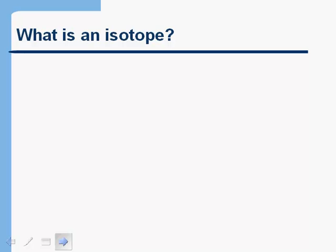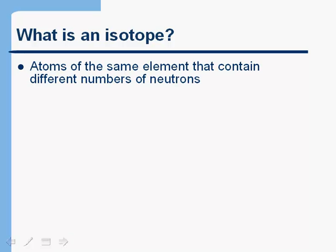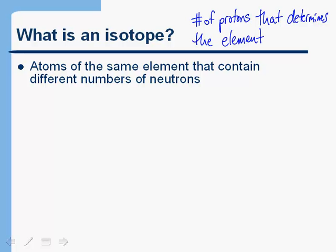You'll notice that on the last slide I was saying the most common form of carbon or the most common form of oxygen. And that's because atoms of the same element can have different numbers of neutrons. Remember that it's the number of protons that determines the element. So atoms of the same element that contain different numbers of neutrons are called isotopes.